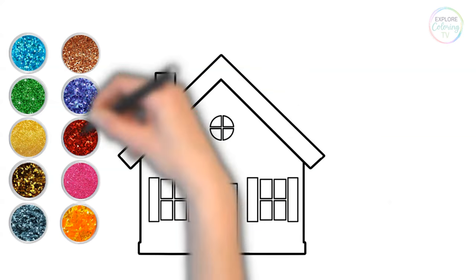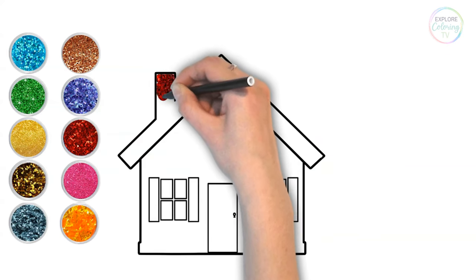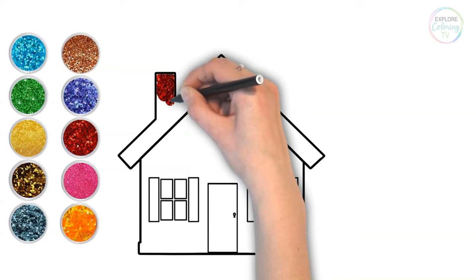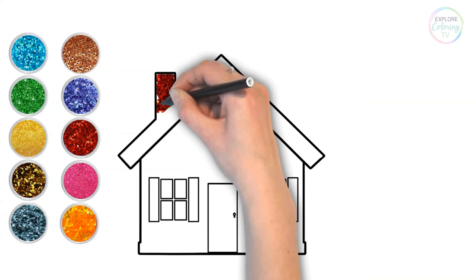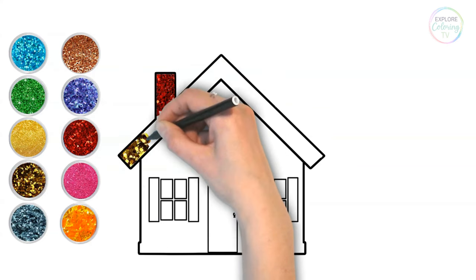Alright, let's colour the chimney red. And for the roof, we'll use a shiny gold.